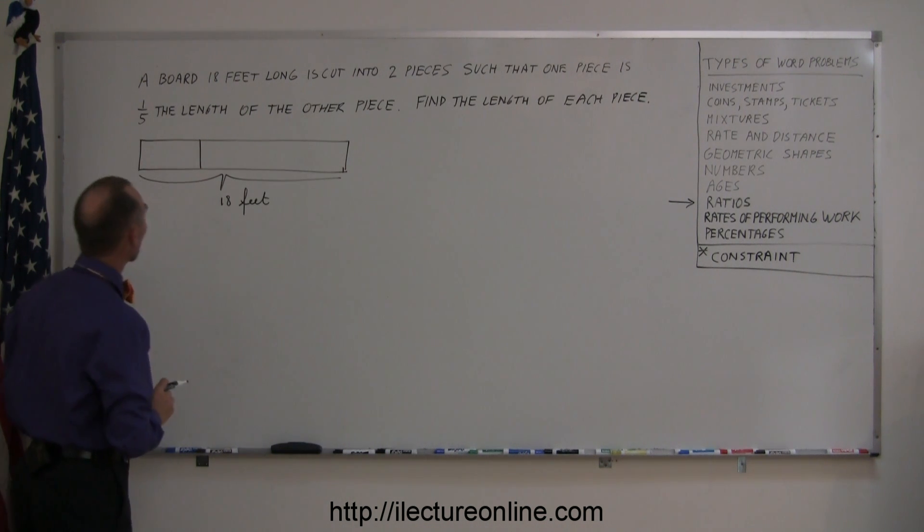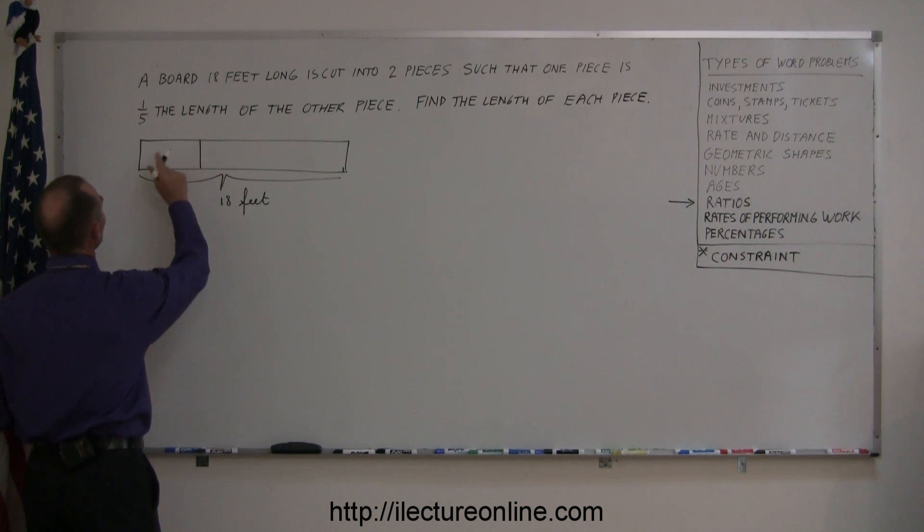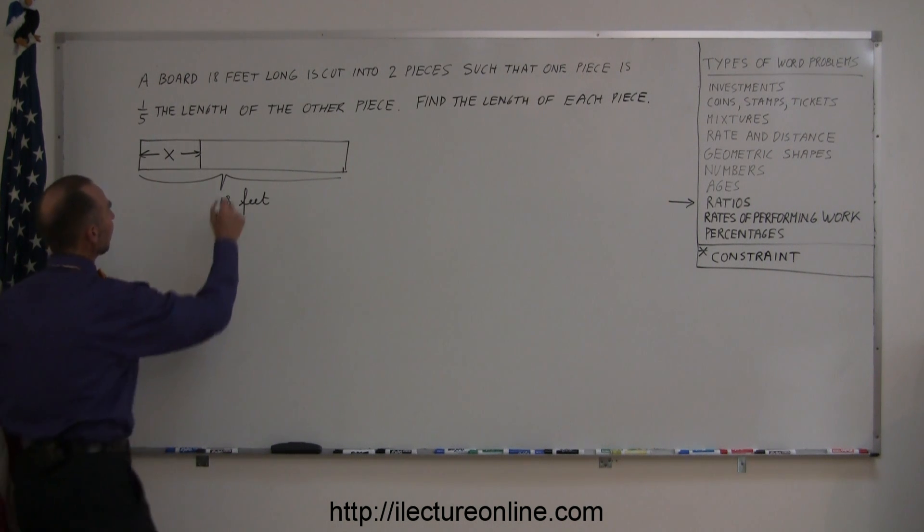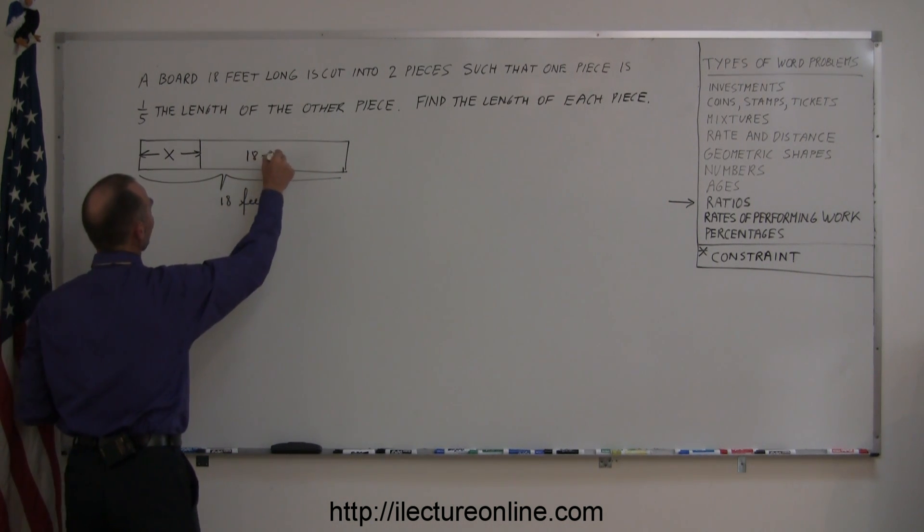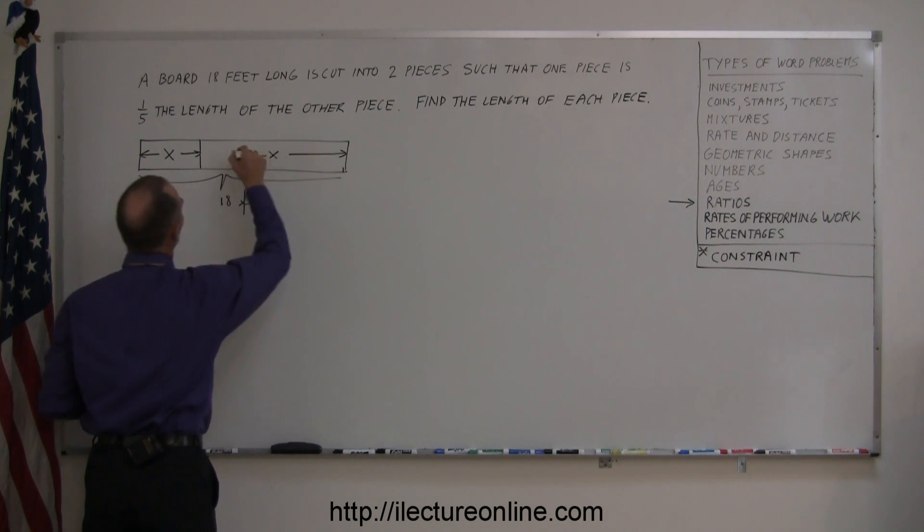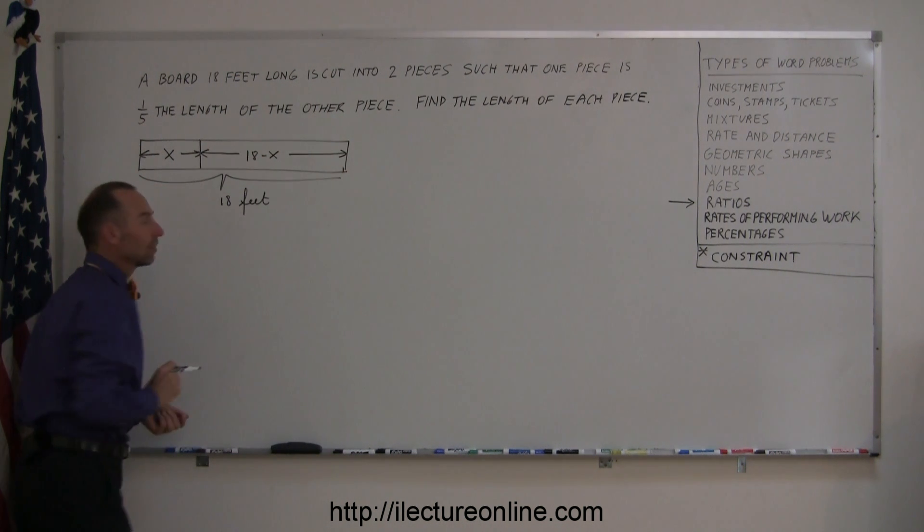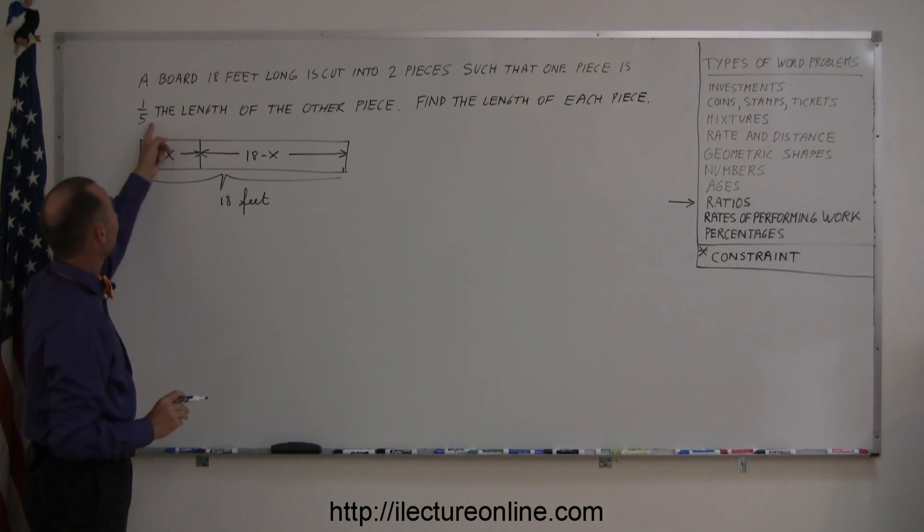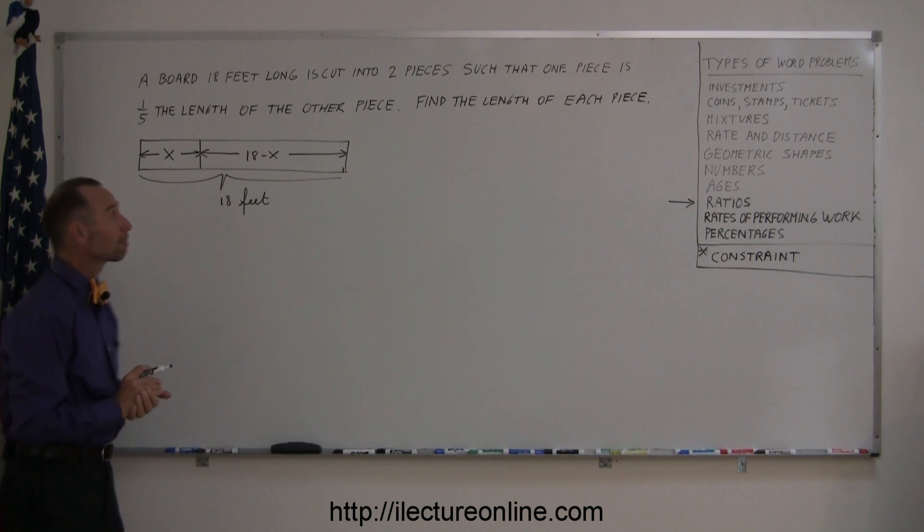Alright, so if we call this x in length, if you let x be the length of the short piece, then 18 minus x would be the length of the long piece. And then the problem says that the long piece is five times as big as the short piece, or the short piece is one-fifth the length of the big piece.